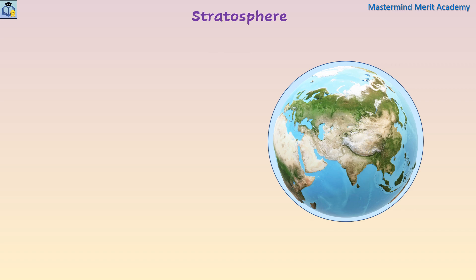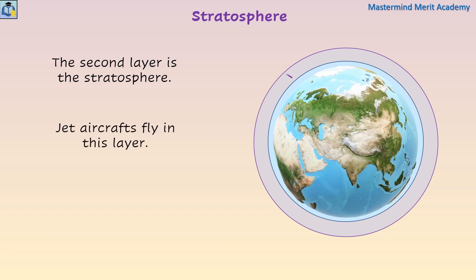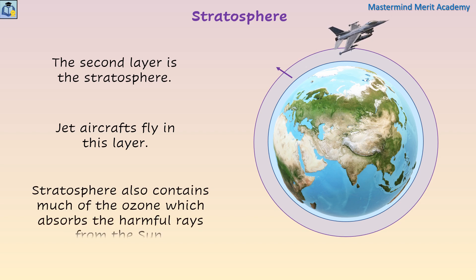The second layer is the stratosphere. Unlike the troposphere, stratosphere actually gets warmer the higher you go. Jet aircrafts fly in this layer as it is less turbulent and provides a smoother ride. Stratosphere also contains much of the ozone which absorbs the harmful rays from the sun. By absorbing dangerous UV radiation, the ozone in the stratosphere protects us from skin cancer and other health damage.